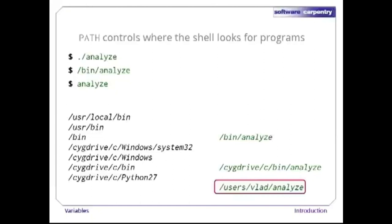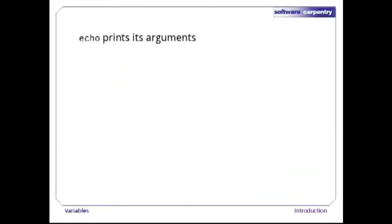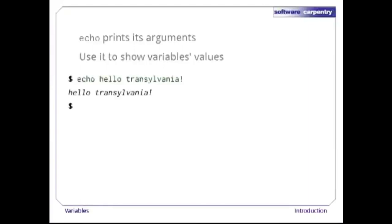Before we explore variables any further, let's introduce one more command: echo. All it does is print out its arguments. This doesn't sound very exciting, but we can use it to show variable values. First, let's make sure it works — 'echo hello Transylvania' puts 'hello Transylvania' as promised. Now let's try to show the value of the variable HOME with 'echo home'. Whoops, that just prints 'home'.